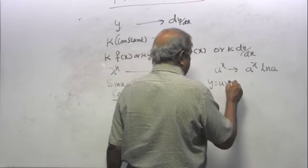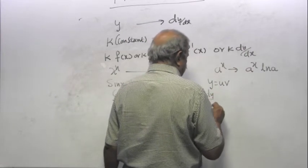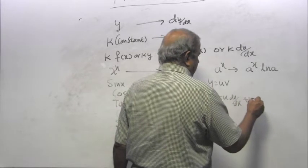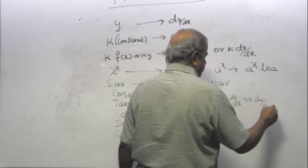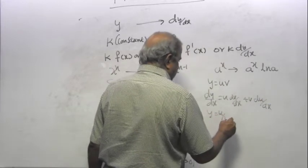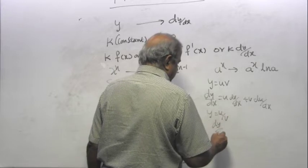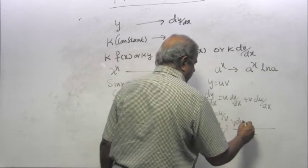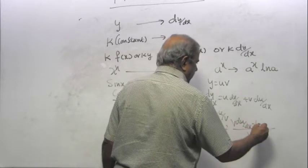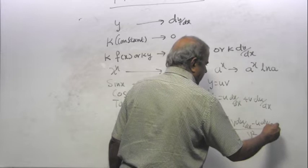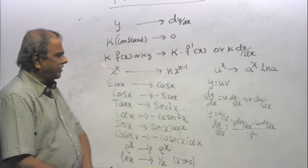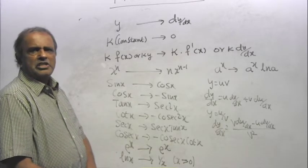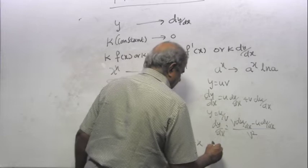Y equal to UV. DY by DX equal to U DV by DX plus V DU by DX. If Y is equal to U over V, DY by DX is equal to, V squared, V DU by DX minus U DV by DX. I think in Edexcel it is F over G is G F dash minus F G dash over G squared or something like that. And then...